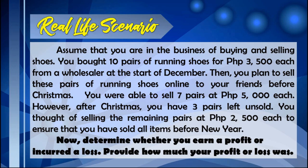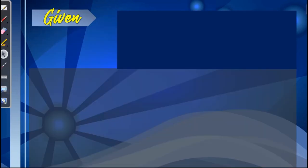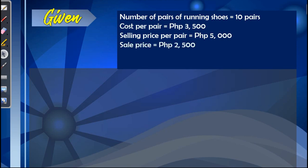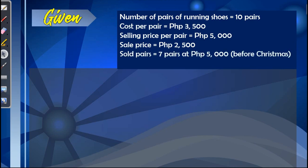You thought of selling the remaining pairs at $2,500 each to ensure all items were sold before New Year. Now, determine whether you earned a profit or incurred a loss. The data observed: 10 pairs of running shoes; cost per pair is $3,500; selling price per pair is $5,000; sale price is $2,500; 7 pairs sold at $5,000 before Christmas, and 3 pairs sold at $2,500 after Christmas.